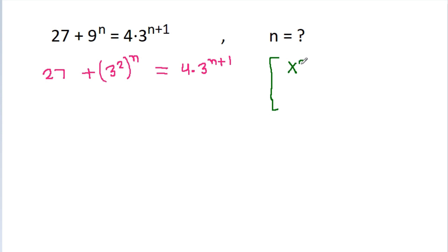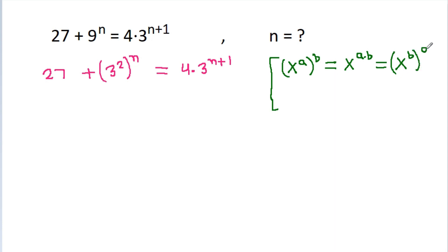Using exponent rules: x power a, power b, is equal to x power a times b. And x power a plus b is equal to x power a times x power b.